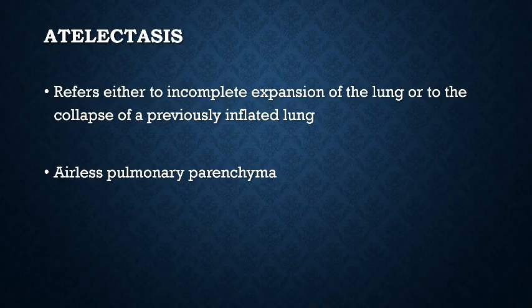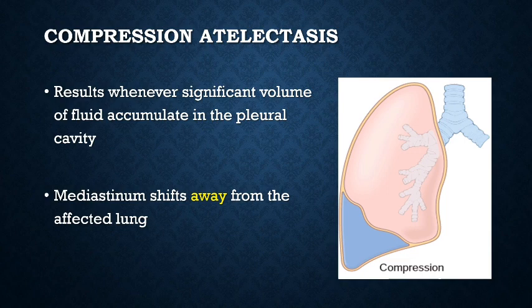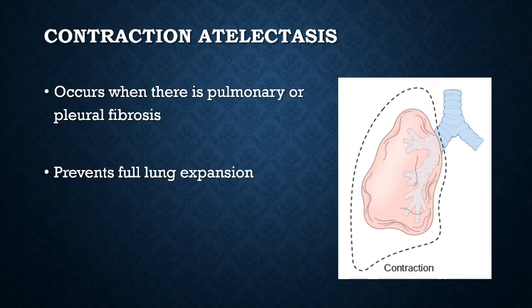The main types of acquired atelectasis, encountered principally in adults, are the following. Resorption atelectasis stems from complete obstruction of an airway. Over time, air is resorbed from the dependent alveoli, which collapse. Since lung volume is diminished, the mediastinum shifts toward the atelectatic lung. Compression atelectasis results whenever significant volumes of fluid — either transudate, exudate, blood, tumor, or air — accumulate within the pleural cavity. With compression atelectasis, the mediastinum shifts away from the affected lung.